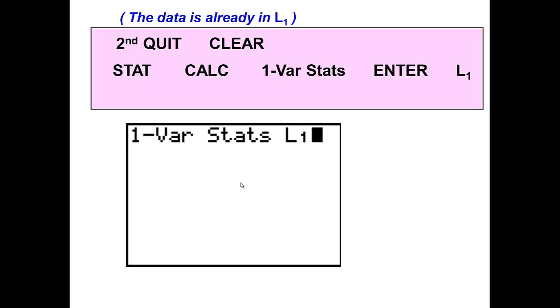Then press stat, calculate, choose one variable statistics which should already be highlighted. The enter there is to choose the one variable statistics. So if you press one, you will not need to press enter. Type in second L1. Then you will press enter again.